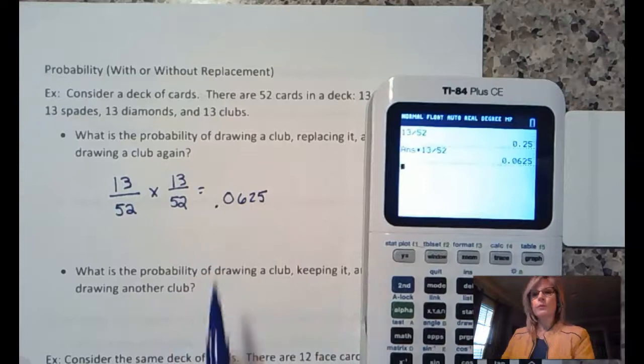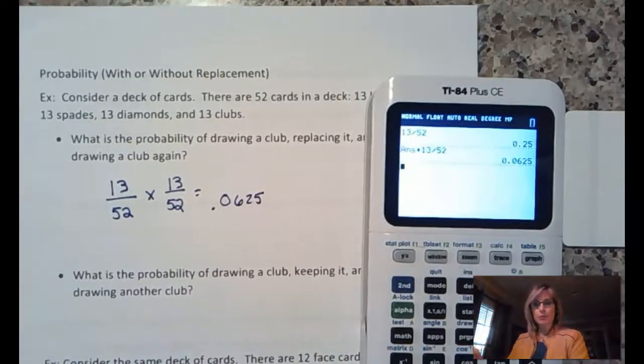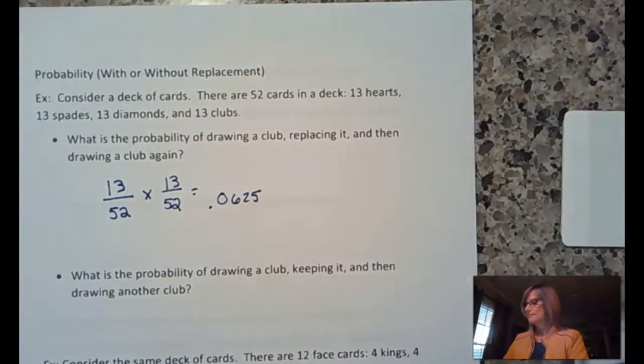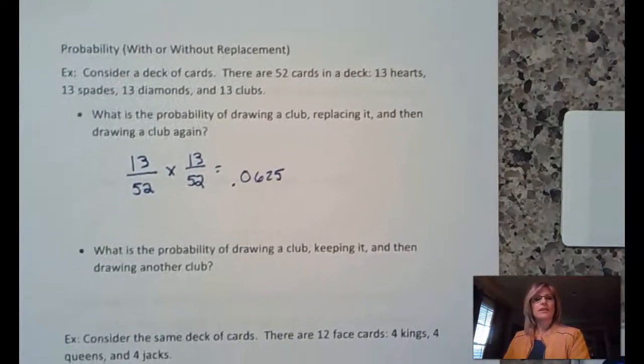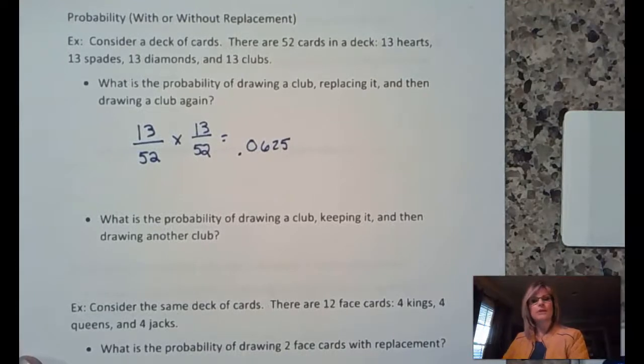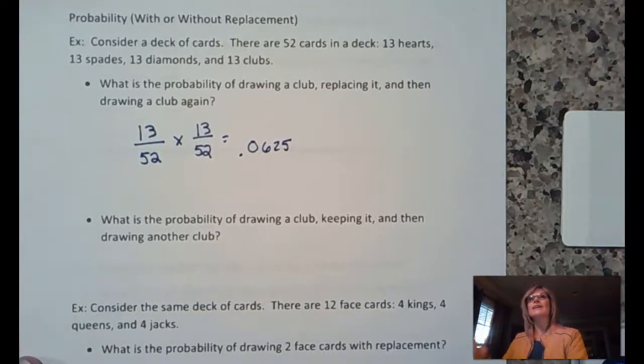Again, when we write probabilities, use three decimal places after the zeros. So, it's really three significant digits. Okay, the second one. What's the probability of drawing a club and then keeping it and drawing another club?